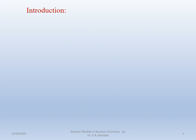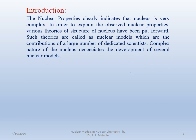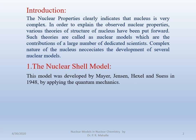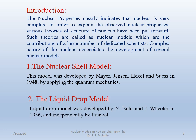Let us start with the introduction of the nuclear models. Nuclear properties clearly indicate that the nucleus is very complex. In order to explain the observed nuclear properties, there are many theories which have been proposed. We will discuss some of the nuclear models. Number 1 is the nuclear shell model, developed by Mayer, Jensen, Hexel and Swiss in the year 1948 with the help of quantum mechanics. The second is the liquid drop model, developed by Niels Bohr and Jay Willer in the year 1936 and also independently by Prankel.